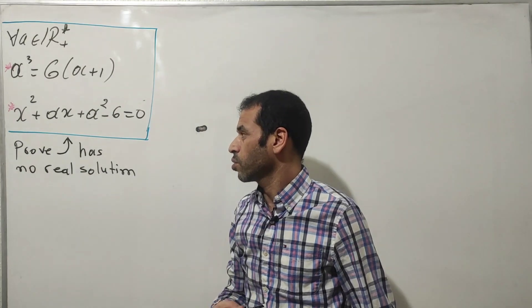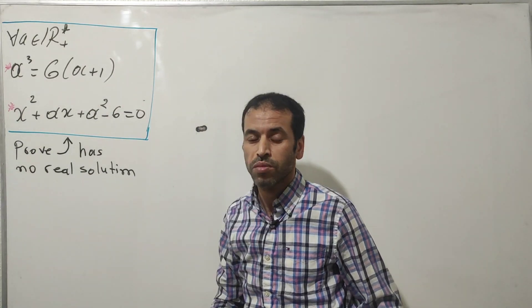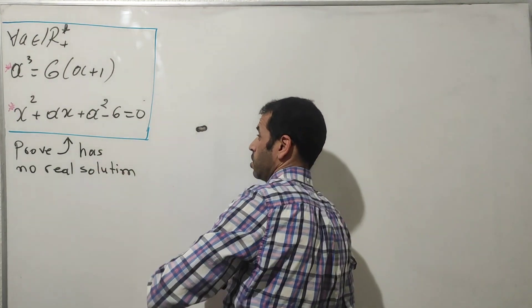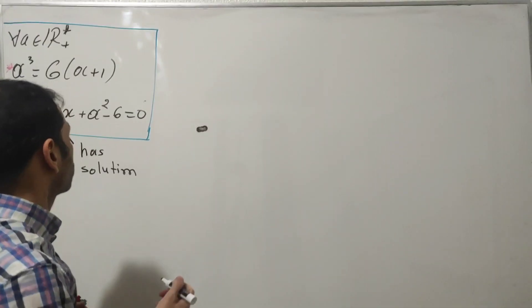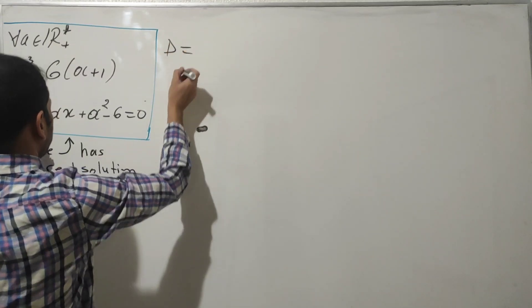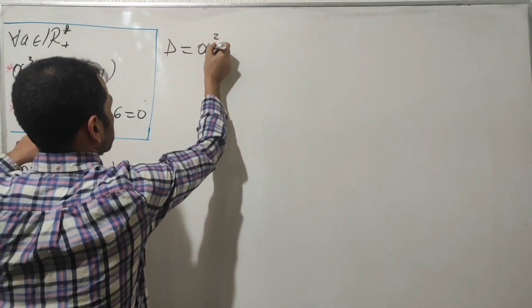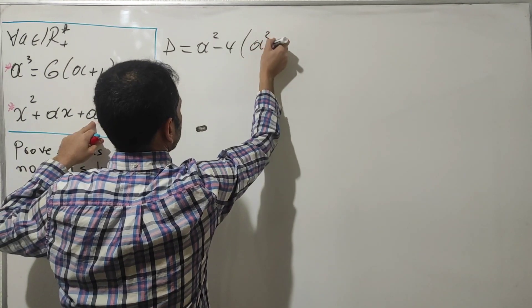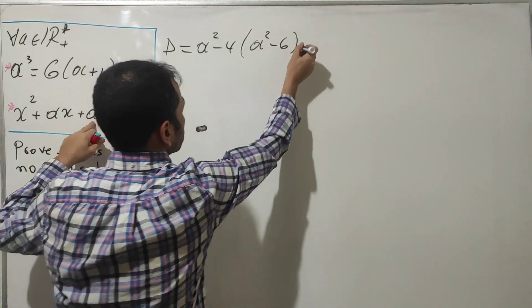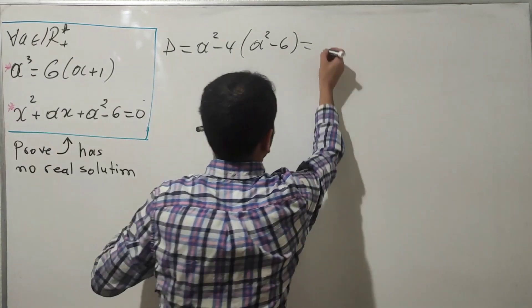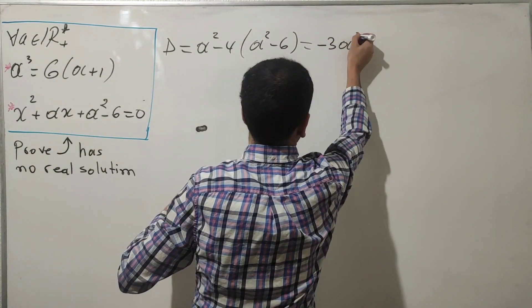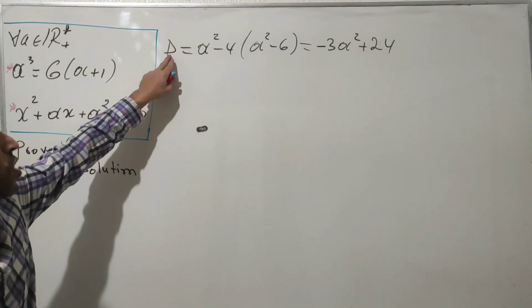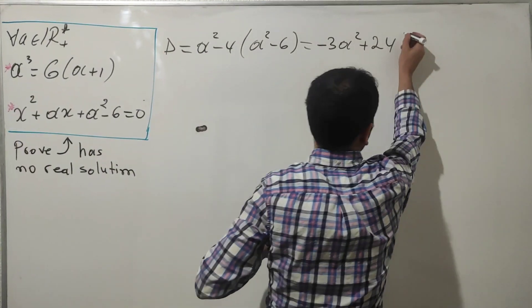This equation has no real solutions, which means the discriminant of this quadratic must be negative. Let's calculate delta of this quadratic form: we get Δ = a² - 4(a² - 6). Simplifying this gives us Δ = -3a² + 24. For the equation to have no real solutions, this delta must be strictly negative.